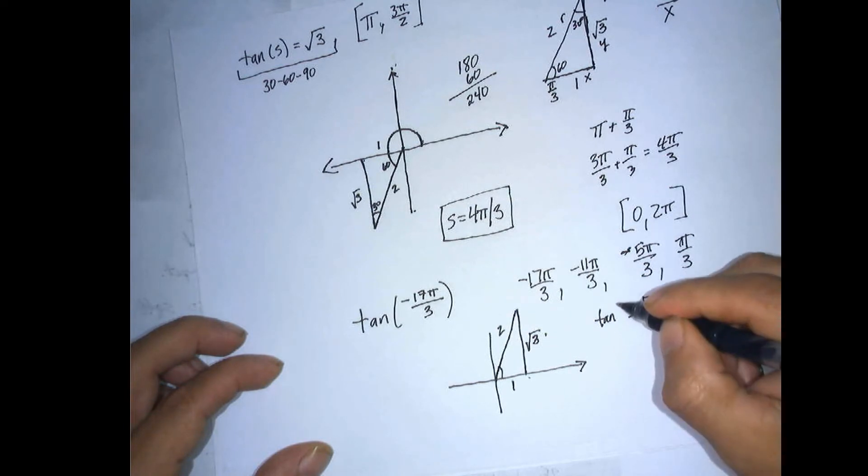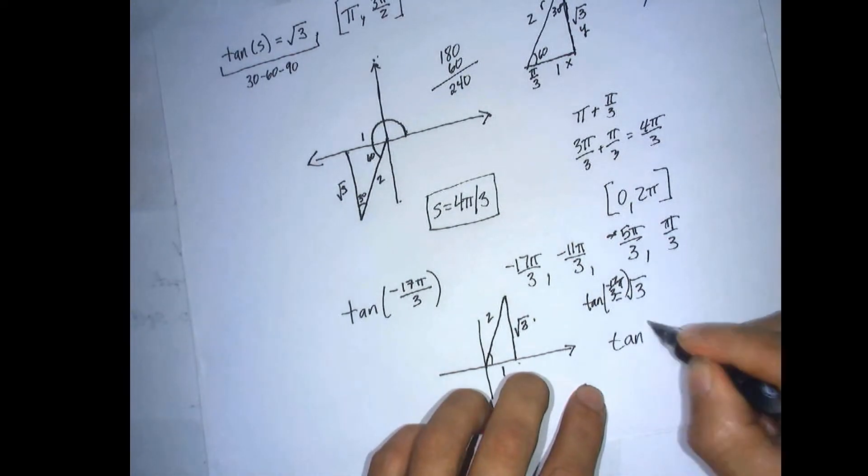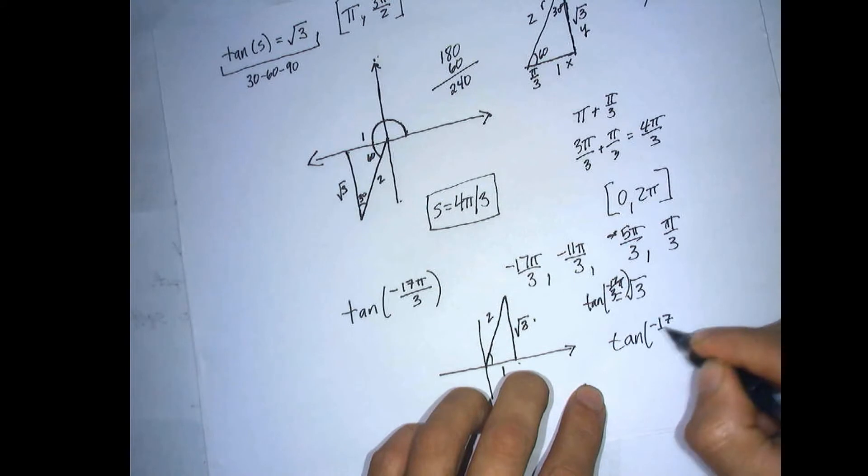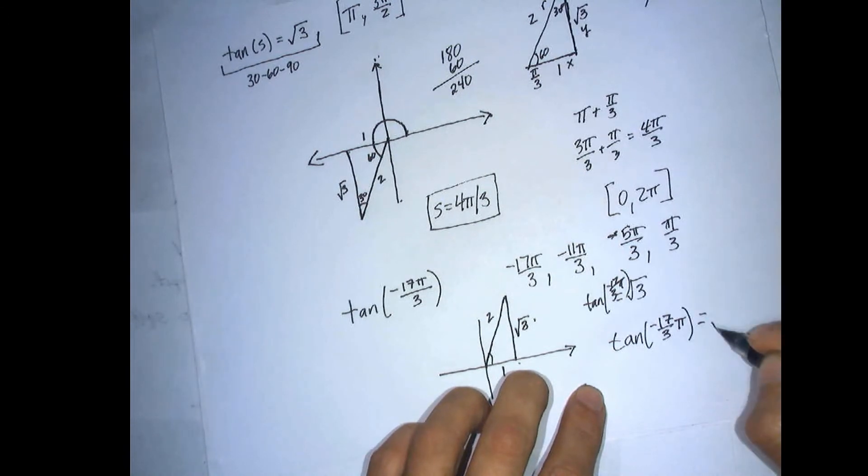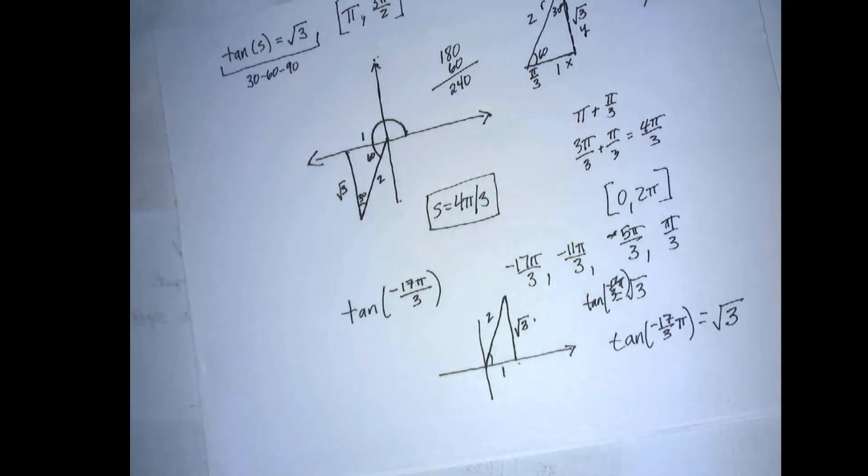So tangent negative 17 pi over 3 is square root of 3. Let me write that better. Tangent negative 17 over 3 pi is the square root of 3. All right, let me check this. Don't take my word for it. Let me check it on a calculator here.